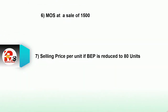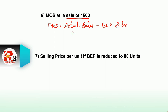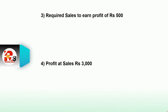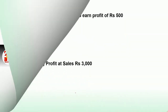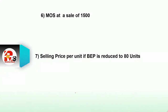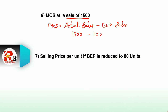Now we calculate Margin of Safety (MOS) at a sale of rupees 1500. The formula is: MOS = actual sales minus break-even sales. Actual sales is 1500. Break-even sales — we take the original BEP in rupees which was 1000. So MOS = 1500 minus 1000 = rupees 500. Margin of safety is rupees 500.